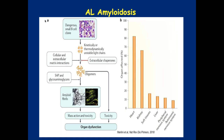With regards to light-chain amyloidosis, the source of the problem comes from the bone marrow. There is a clone that doesn't necessarily have to be a big clone — the median number of monoclonal plasma cells associated with amyloid is in the range of eight to nine percent. The proteins are unstable, and with extracellular proteins and chaperones, monomers and oligomers form fibers that travel from the bone marrow through the blood, and have mass suction and toxicity. It's not only the deposition by itself that causes the damage, but also the toxicity that comes with the deposition of this protein.